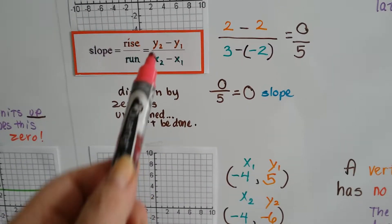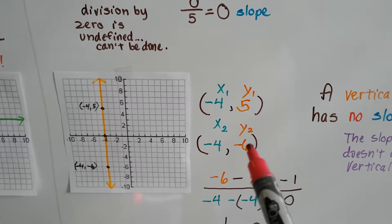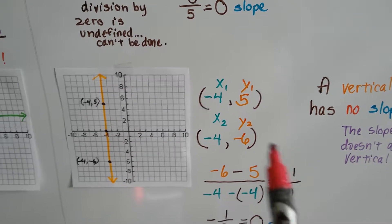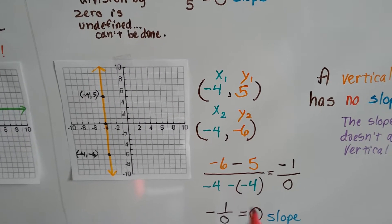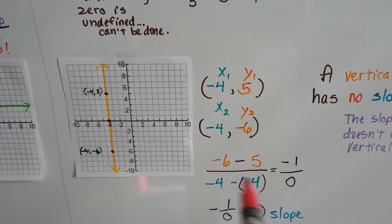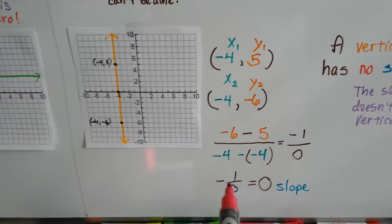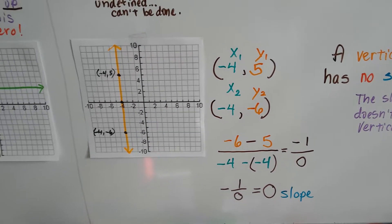We follow this formula. We do negative 6 take away 5 as the numerator. That's going to give us negative 11. And we do negative 4 take away negative 4. That's going to give us zero. When we add the opposite, we get negative 4 plus 4 is zero. So we get negative 11 over zero. That's no slope.